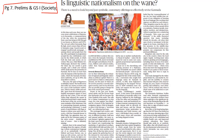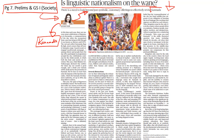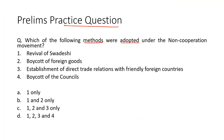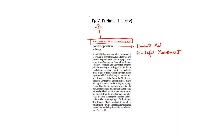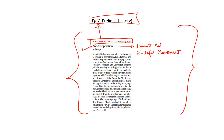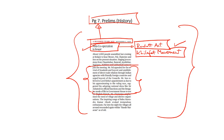This question has been asked because we have a column on page number 7 which evaluates whether linguistic nationalism is on the decline in the country. The article is particularly focused on linguistic nationalism and regionalism based on the Kannada language, and the writer suggests a few ways through which the rich heritage and culture of the Kannada language can be revived. Now let's take up the next question. Which of the following methods were adopted under the non-cooperation movement? The options are revival of Swadeshi, boycott of foreign goods, establishment of direct trade relations with friendly foreign countries, and boycott of the councils. All four are correct, so option D is the right answer. The non-cooperation movement was launched by Mahatma Gandhi as a direct response to the Rowlatt Act in coordination with the Khilafat movement.